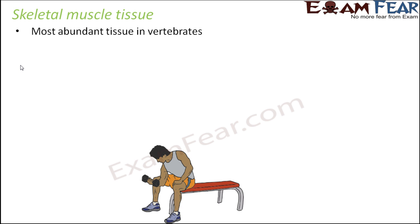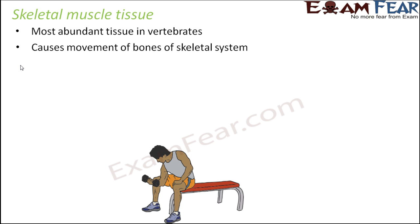What is skeletal muscle tissue? It is the most abundant tissue in vertebrates. Whenever we talk about muscles, we generally talk about skeletal muscles. They cause movement of bones of the skeletal system. The bones form the skeleton, and if you want to move anything — your hands, your legs, your feet — the bones need to be moved. This movement of bones is controlled by the skeletal muscle tissue.